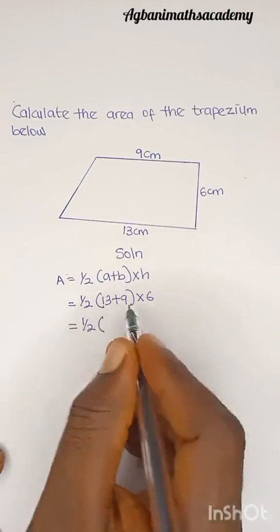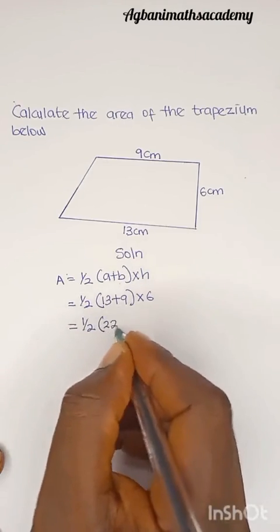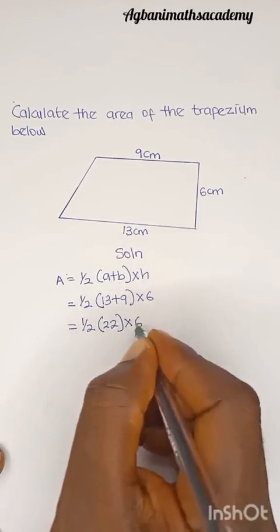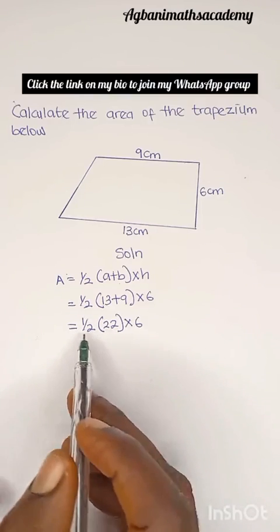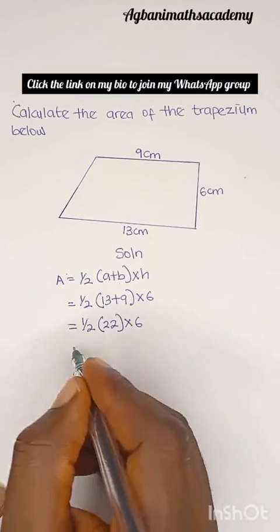So we have A equals half, 13 plus 9 is going to give us 22 multiplied by 6. What is half of 22?